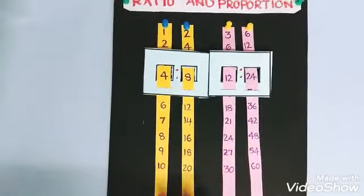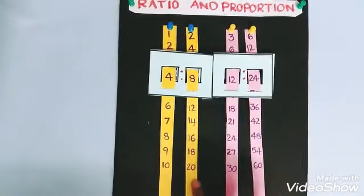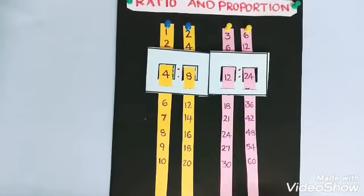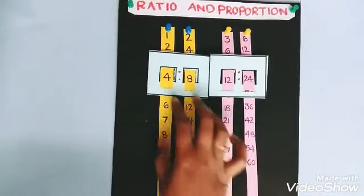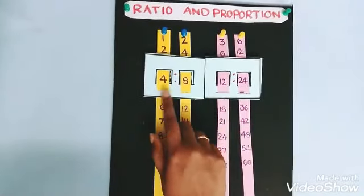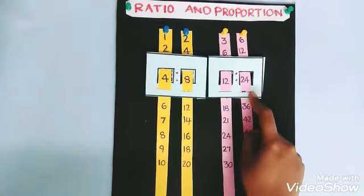you can see there are 1 to 10 numbers and 2 table respective to the 3 table and 6 table. Now we will learn about ratio and proportion. Here, 4 is to 8 equals 12 is to 24.